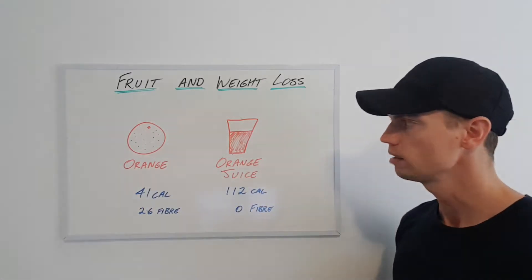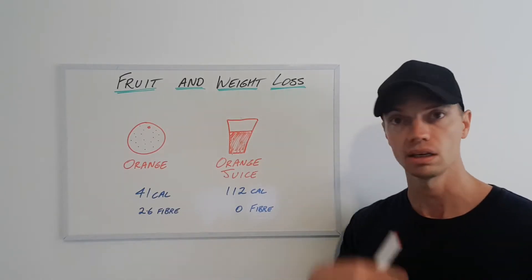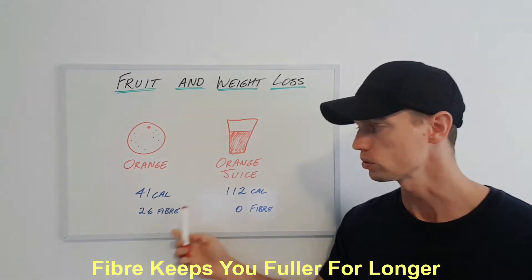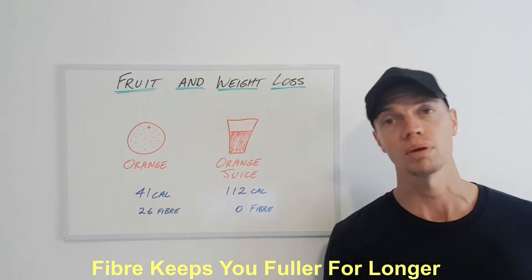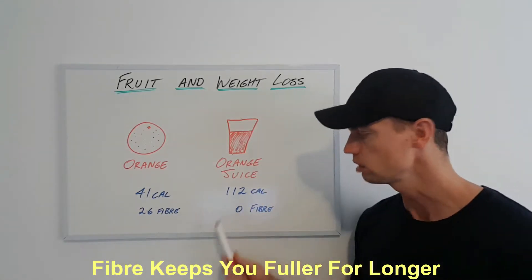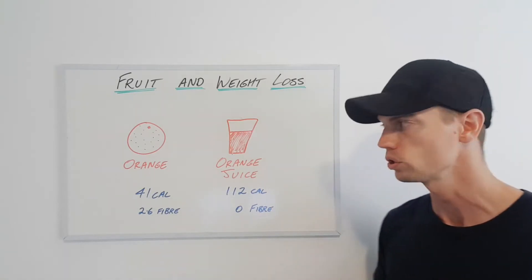Now personally I think if I ate a whole orange I would feel fuller than if I drank a small cup of juice and that's probably because by eating whole fruit we get some benefits such as extra fiber. So in an orange we've got 2.6 grams of fiber that come along with that. Whereas if we drank some orange juice we've got zero grams of fiber. It's all kind of been filtered out of it to create the juice.